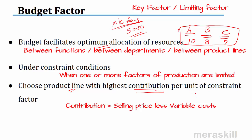I will look at contribution per machine hour, rank the products, and based on that ranking allot the limited machine hours. The key factor or budget factor is a very important concept for decision-making. When there is a limiting factor — whether material, labor hours, or machine hours — we choose the product line with the highest contribution per unit of the constraint factor.